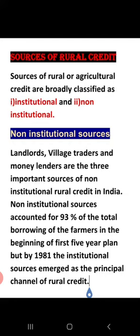Non-institutional sources are those taken on a friendly or informal basis. For example, if I am a farmer availing money from landlords, village traders, and moneylenders — these three are the important sources of non-institutional rural credit. In the first Five Year Plan, 93% of farmer borrowings were from non-institutional sources. But by 1981, institutional sources emerged as the principal channel of rural credit, and trust in them increased.